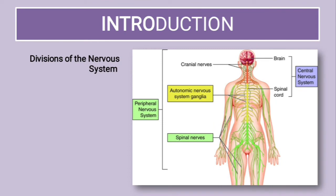This is a diagram of our nervous system. As you can see, it starts from the brain, then there is the spinal cord, and attached to the spinal cord are various nerves.